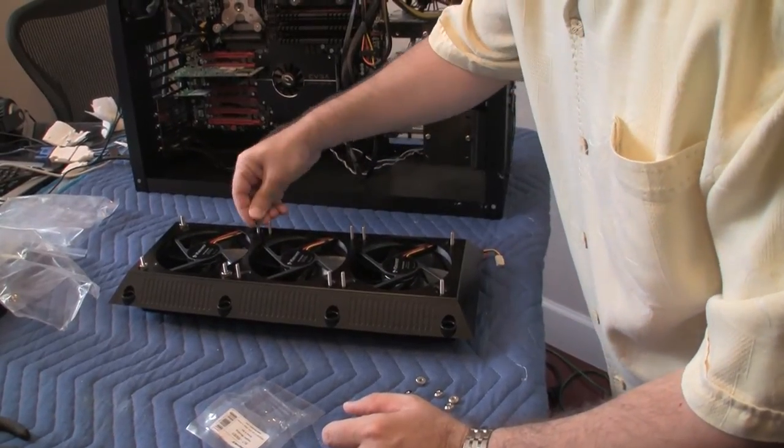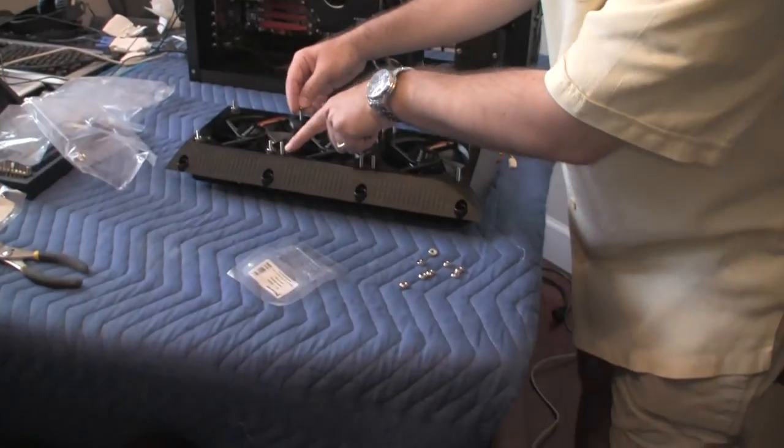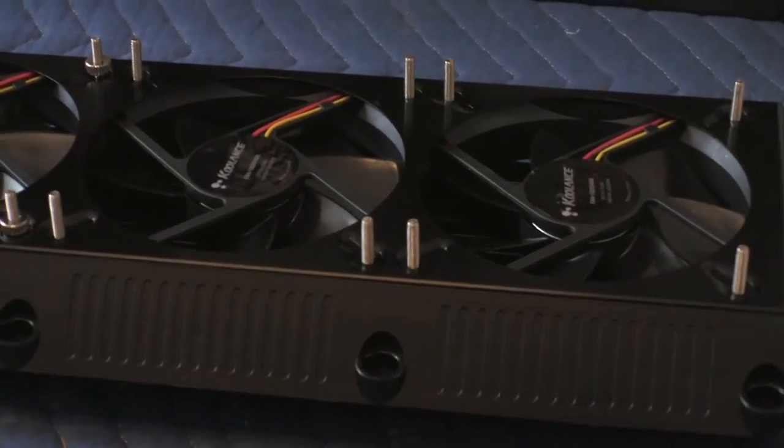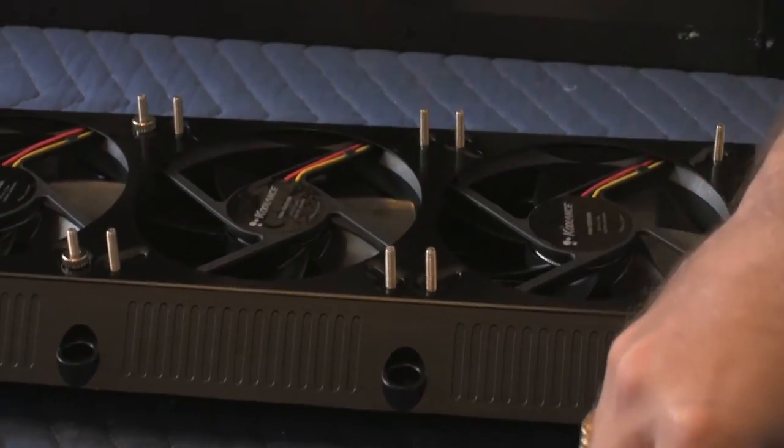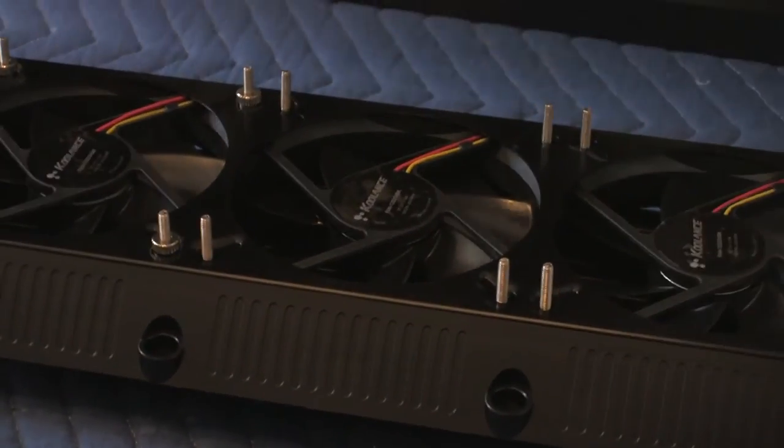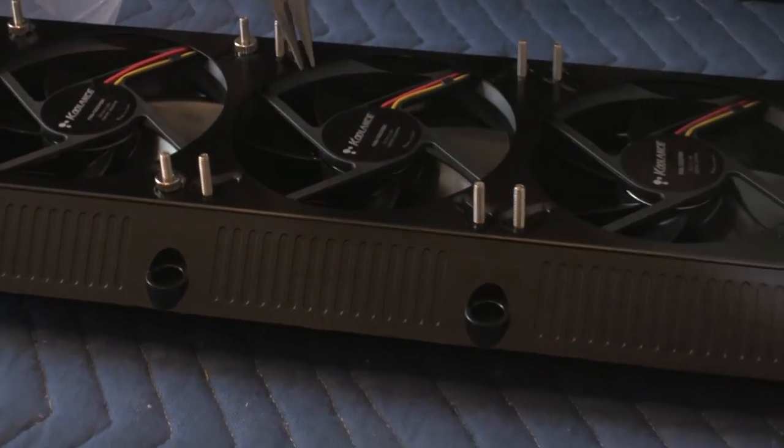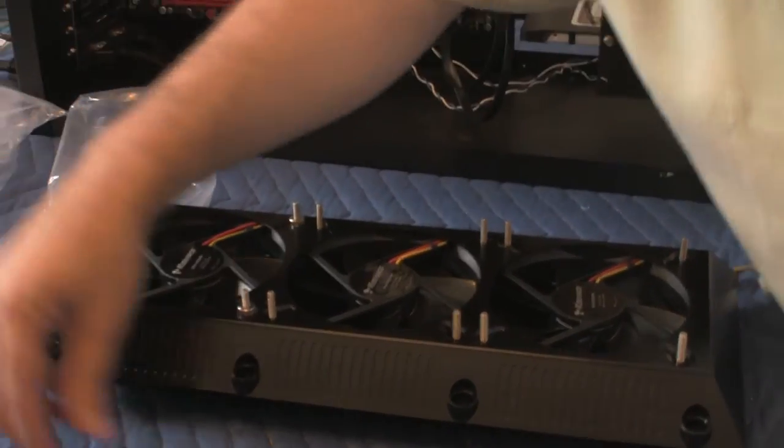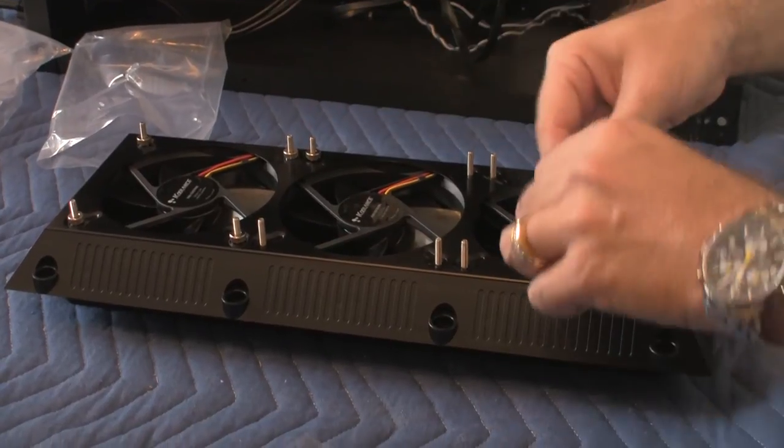Now, the cool thing about this shroud that I like is these indents that Coolance make. And these indents are made so that you can put the fan grills right on top of it and it will look really nice. That's what you don't want to have happen. So, fortunately, I have a pair of needle nose pliers. Be careful not to puncture the radiator. There we go.